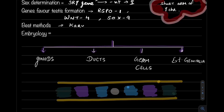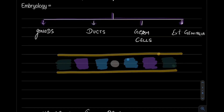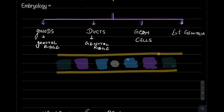Karyotyping is the method used for sex determination and detecting any defect in chromosomes. In embryology, the first gonads are derived from the genital ridge. The genital ridge and ducts — just like ovaries and testes — are part of the same origin. Germ cells are derived from the epiblast.